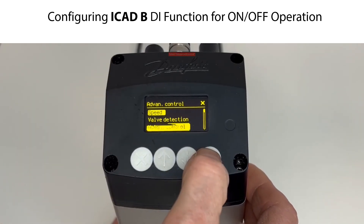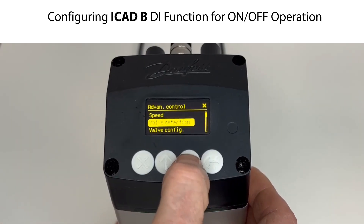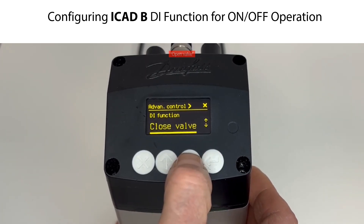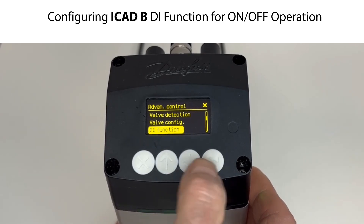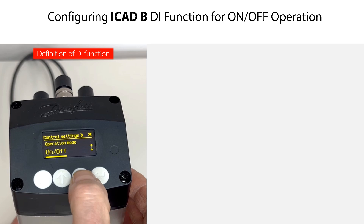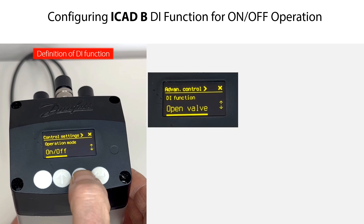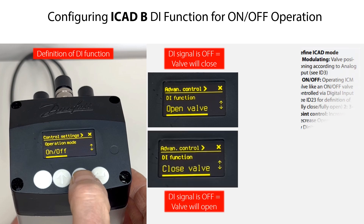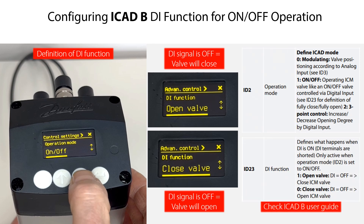Scroll down to Advanced Control, then press Enter. Scroll down to DI Function, then press Enter. Select between Open Valve and Close Valve. Press Enter to confirm the needed function, then press Exit several times to return to Service. Please note that if selecting Open Valve, this will close the valve when the DI signal is off. And if selecting Close Valve, this will open the valve when the DI signal is off. You can find more information about the DI Function in the ICAD-B User Guide, as illustrated here.